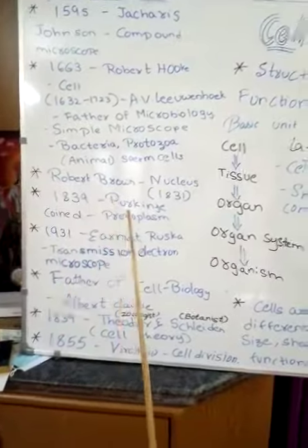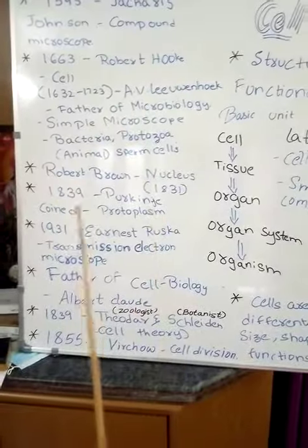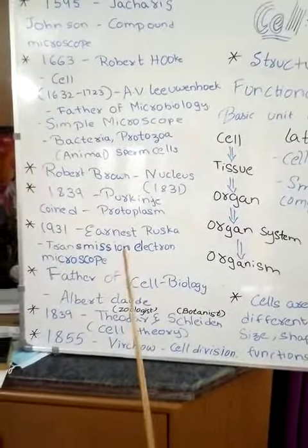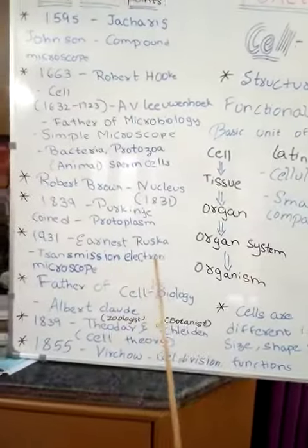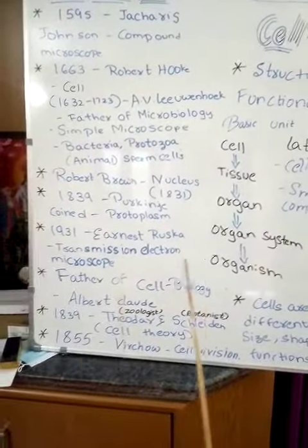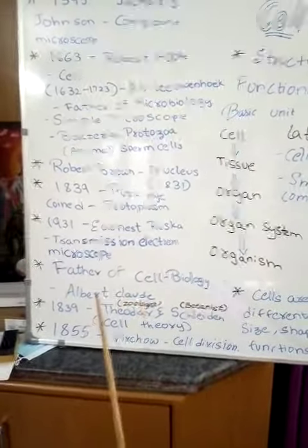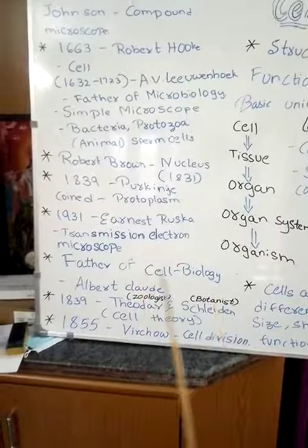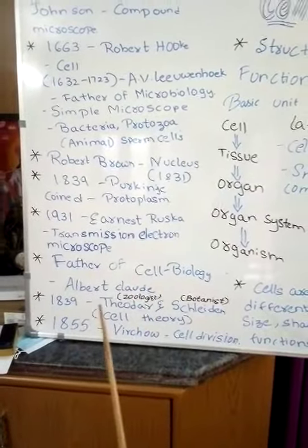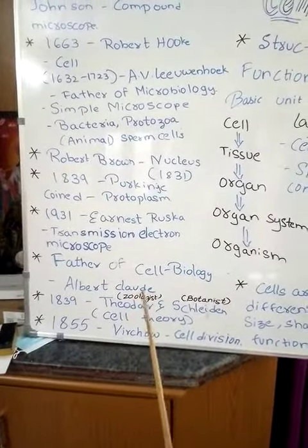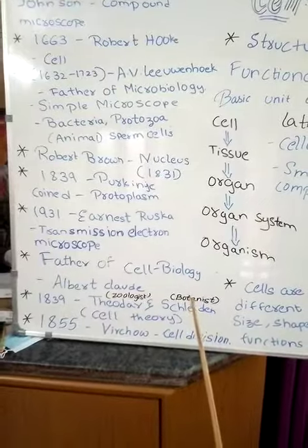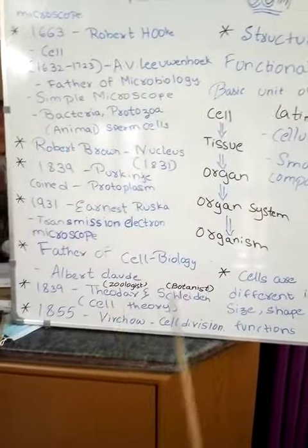Robert Brown discovered the nucleus in the year 1831. In 1839, Purkinje coined the term protoplasm. In 1931, Ernst Ruska discovered the transmission electron microscope. Albert Claude is considered the father of cell biology.